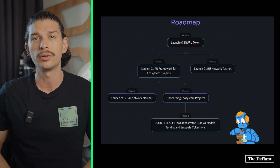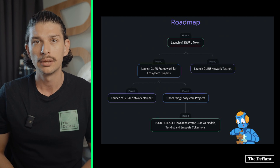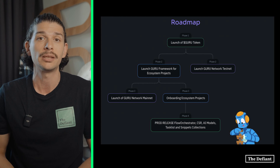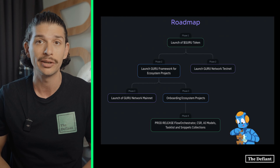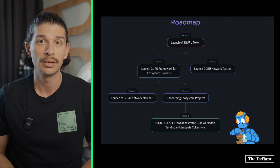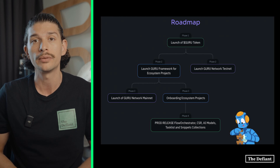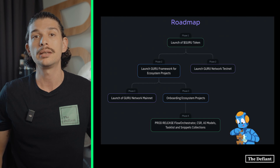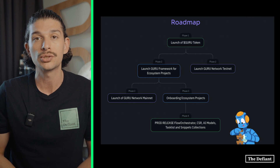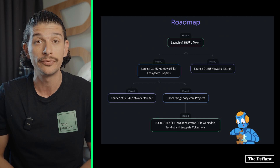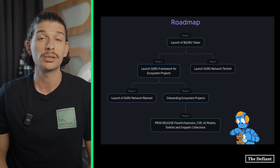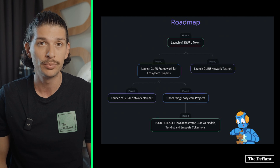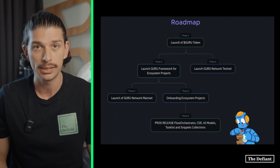Following a successful phase two, the network will move into its phase three, which is marked by the official launch of mainnet, as well as the onboarding of ecosystem projects into the Guru Network. Finally, Guru will transition into its phase four, where products such as the Flow Orchestrator, AI models and more will all be released.